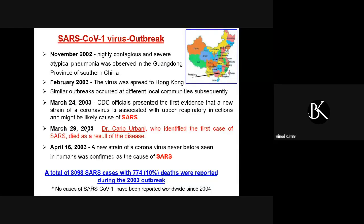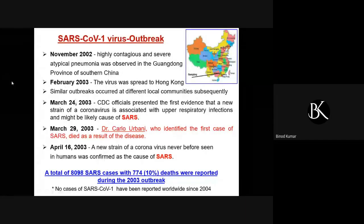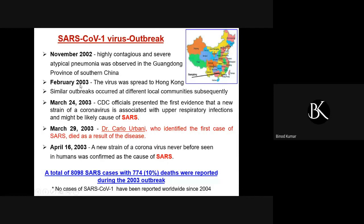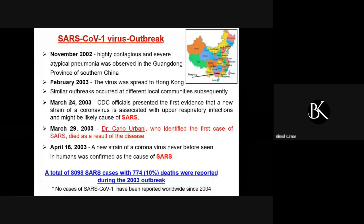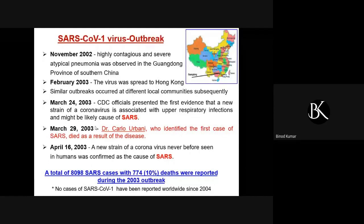To briefly summarize the SARS-1 outbreak: it was in November 2002 when a highly contagious and severe atypical pneumonia was observed in Guangdong province in southern China. Within about a month the virus spread to Hong Kong and similar outbreaks occurred in different communities. On March 24, 2003, the CDC in Atlanta, USA first documented that this was a new virus causing infection of the upper respiratory tract and was the likely cause of SARS.